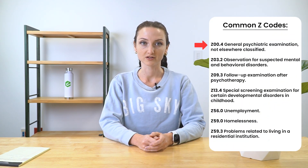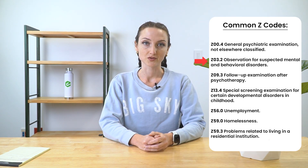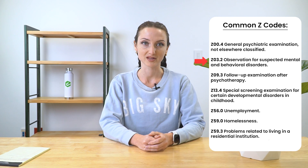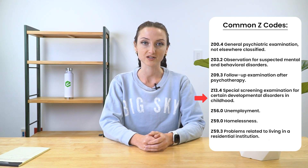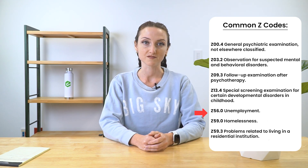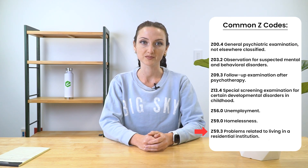Some common Z codes include the following: Z00.4, General psychiatric examination, not elsewhere classified; Z03.2, Observation for suspected mental and behavioral disorders; Z09.3, Follow-up examination after psychotherapy; Z13.4, Special screening examination for certain developmental disorders in childhood; Z56.0, Unemployment; Z59.0, Homelessness; and Z59.3, Problems related to living in a residential institution.